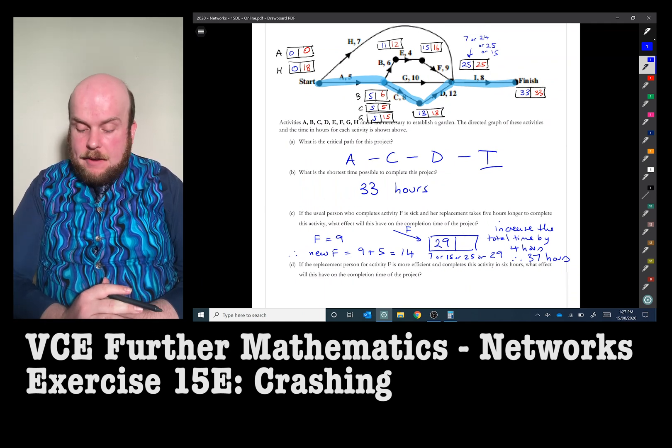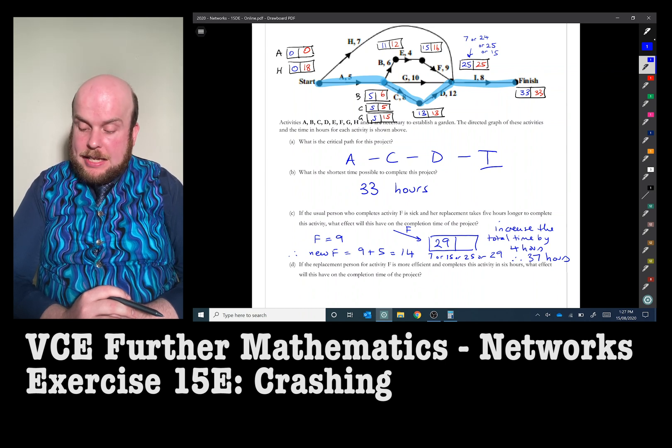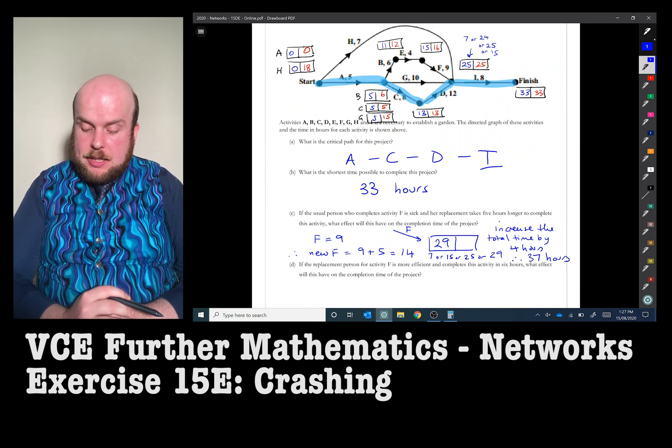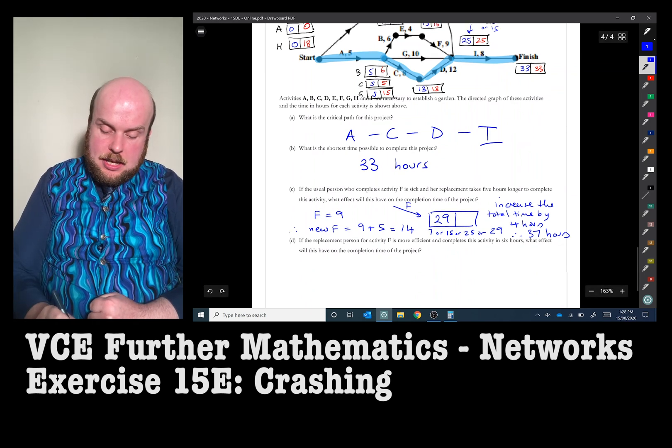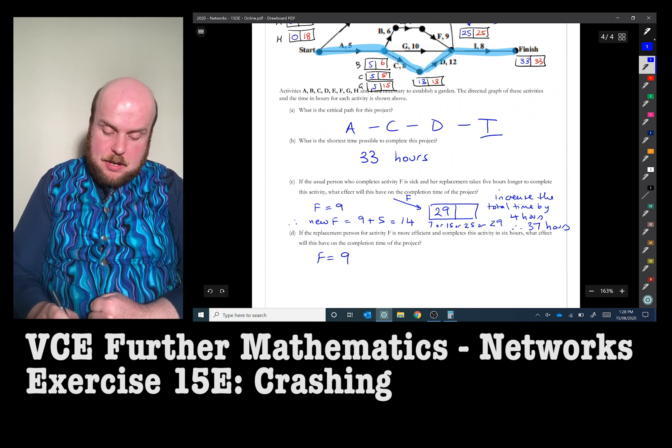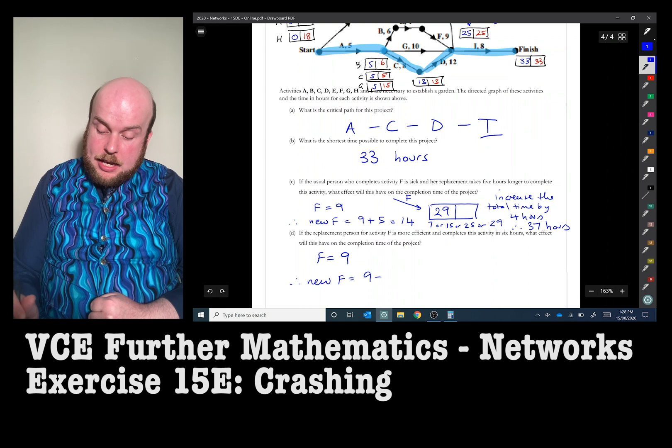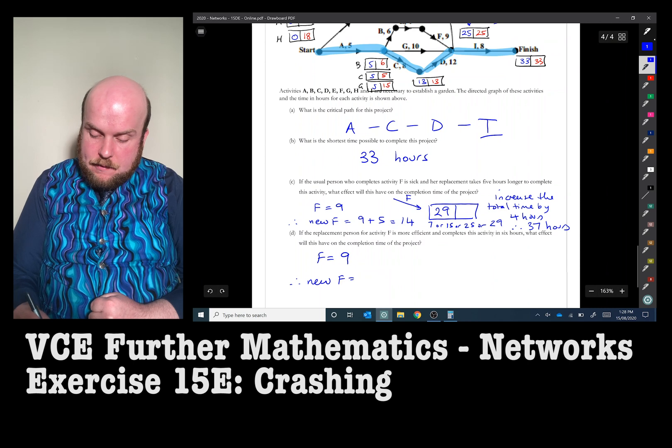Part D: If the replacement person for activity F is more efficient and completes the activity in six hours, what effect will this have on the completion time of the project? So the initial one for F was nine. Therefore, the new F would be six. It's not six less hours, it's six.